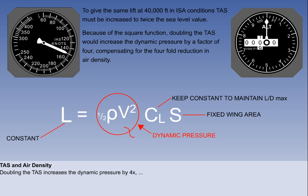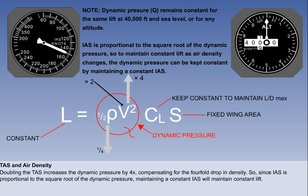Because of the square function of the TAS, doubling it would increase dynamic pressure by 4, compensating for the 4-fold drop in density. So, since IAS is proportional to the square root of the dynamic pressure, maintaining a constant IAS will maintain constant lift.